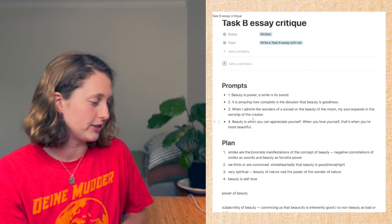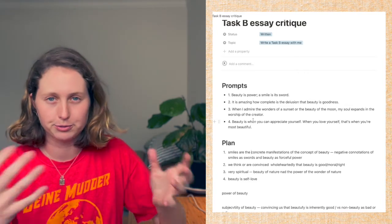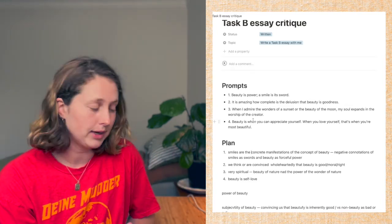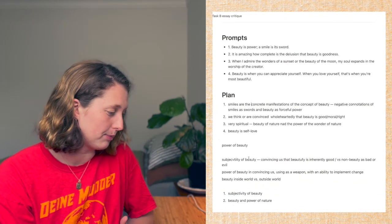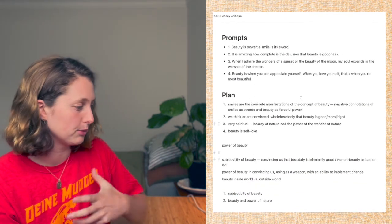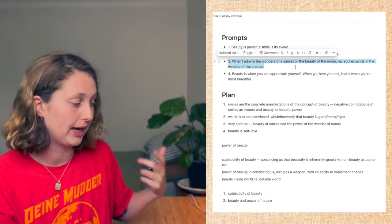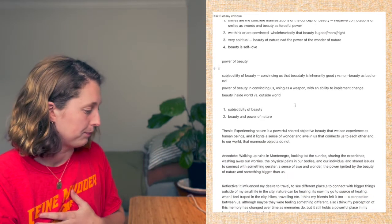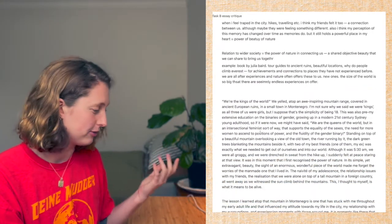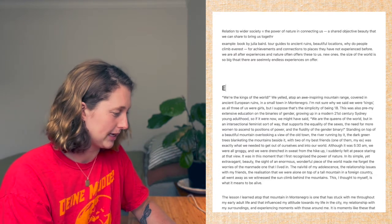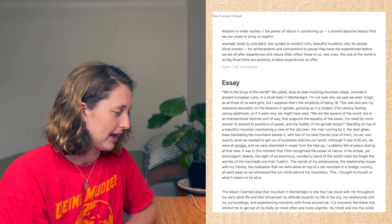Today we're going through the Task B essay critique to try and improve this essay, spot the things that are wrong with it and try and make it better. The prompts tended towards the topic of the power of beauty and I quite liked them. I turned it into a bit of a power of the beauty of nature essay. I made a big plan, decided to write reflectively as I usually do, and then I wrote my essay.